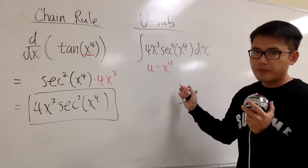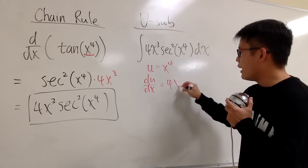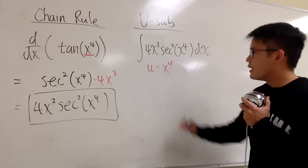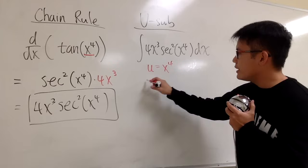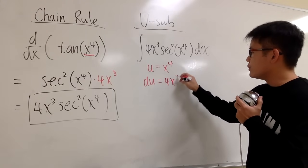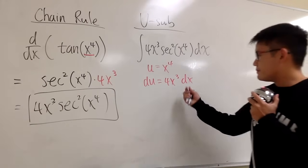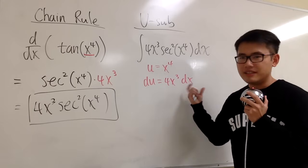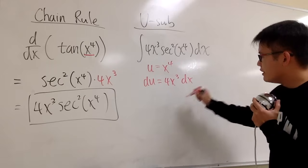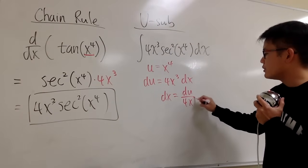Let's differentiate both sides and talk about the differential. On the left-hand side, we get du. On the right-hand side, using the power rule, we have 4x to the third power, plus the dx. So du equals 4x to the third power dx. Now I like to tell my students to isolate the dx. Divide both sides by 4x to the third power, and we get dx equals du over 4x to the third power.